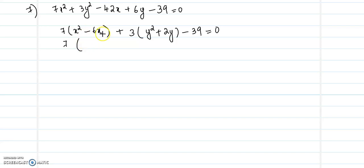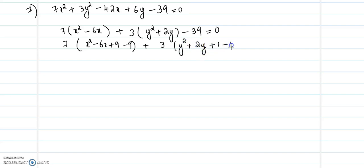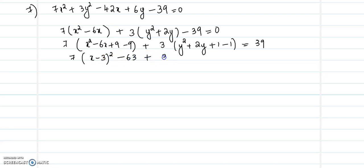To complete the square, we will add and subtract 9, so we get x squared minus 6x plus 9 minus 9. Then 3(y squared plus 2y plus 1 minus 1) equal to 39. That will be 7(x minus 3) whole squared, then there will be a minus 63 here, then 3(y plus 1) whole squared minus 3 equal to 39.